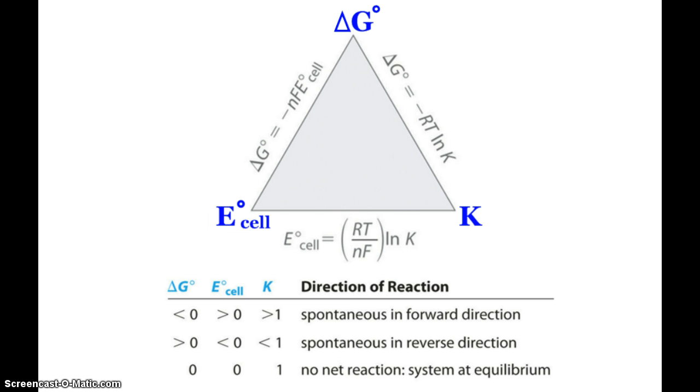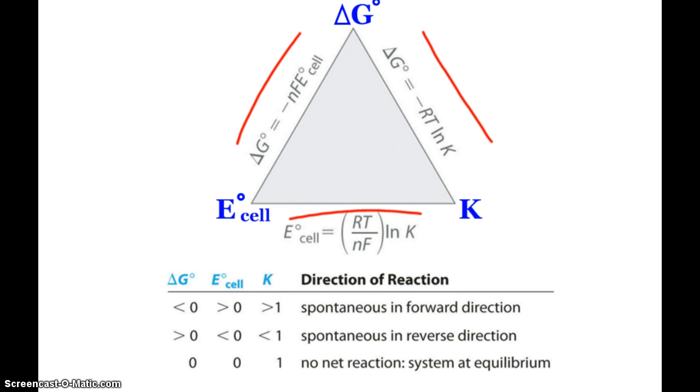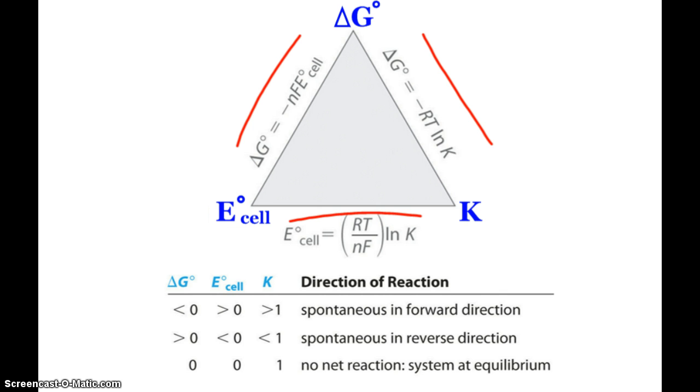What we see here is a summation chart that ties our E-naught cell with our delta G and our K. You can see the equations that link up the different subjects on these lines. A reaction is thermodynamically favored, spontaneous, in the forward reaction when you have a negative delta G, a positive cell voltage, and a K value that's greater than one. It's not thermodynamically favored in the forward, but is in the reverse when you have the opposite, when you have a positive delta G, a negative cell voltage, and a K value less than one.